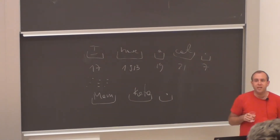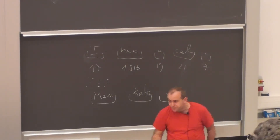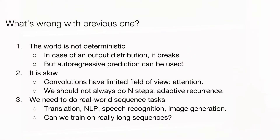You can tune and tweak and hope and put a lot of effort, and it will not train. The main reason is: what's wrong with the previous model? The main thing is we assumed these are deterministic functions — for one input, there is exactly one correct output. That is not the case for translation.